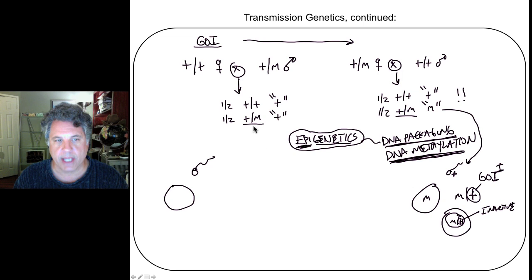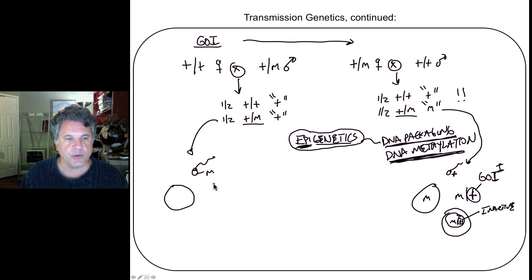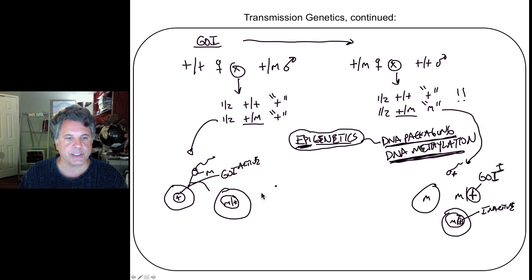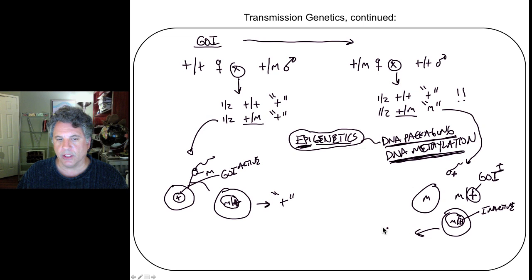Conversely, over here we have the same genotype but from the reciprocal cross: the male is bringing in the mutant allele and the egg is bringing in the wild type allele. The fusion leads to a mutant over wild type genotype, but the mutant allele came from the male, and the female in this case has not silenced that allele — it is still active. So the gene of interest is active from the female's contribution. When we have a wild type allele functioning normally, this produces a wild type phenotype. But in the other case, the wild type allele is inactive, and since it lies over a mutant allele, we end up with a mutant phenotype.